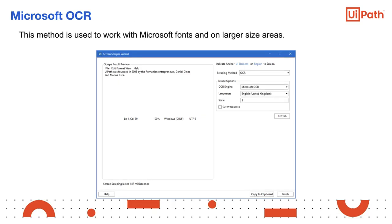Microsoft OCR is used to work with Microsoft fonts and on larger size areas. It supports multiple languages. The Language option enables the user to change the language of the script text; by default, English is selected. The Scale option configures the scaling factor of the selected UI element or image — the higher the number, the more enlarged the image, which provides a better OCR read and is recommended with small images. GetWordsInfo gets the on-screen position of each word in the script.